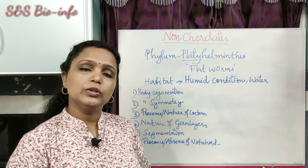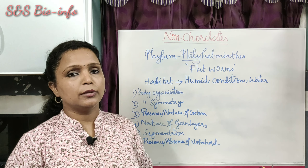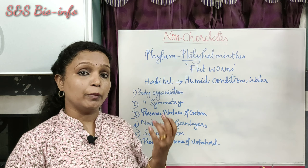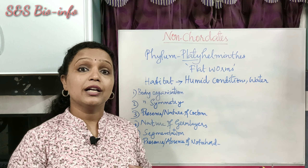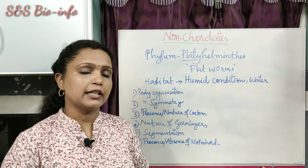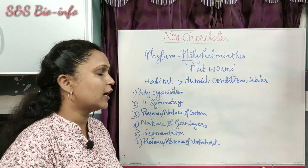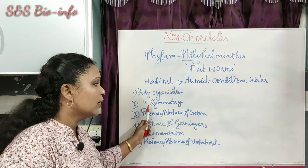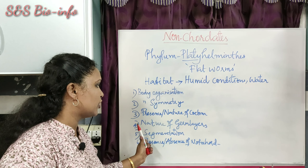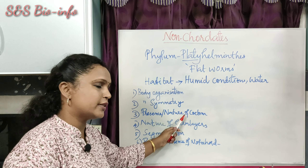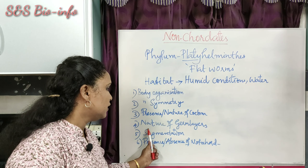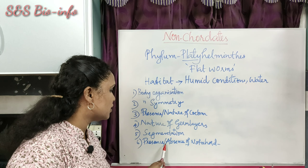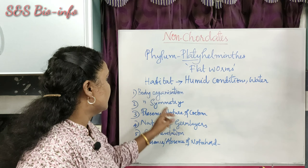We need to remember the criteria for classification of the kingdom Animalia. Those are: body organization, body symmetry, presence or nature of coelom, nature of germ layers, segmentation, and presence or absence of notochord.